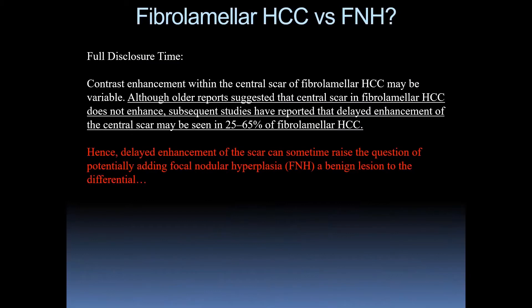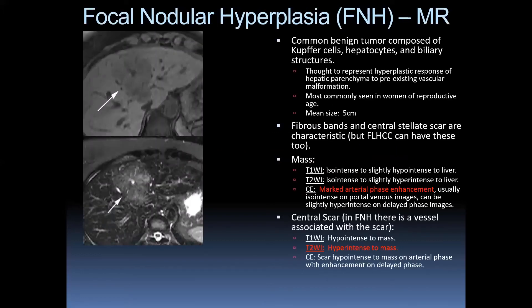Fibrolamellar HCC versus FNH: contrast enhancement within the central scar of fibrolamellar HCC can be variable. Older reports suggested the central scar does not enhance, but subsequent studies have shown delayed enhancement of the scar in up to 65%, which can raise the question of focal nodular hyperplasia. FNH is a common benign tumor of the liver containing Kupffer cells, hepatocytes, and biliary structures. Thought to represent a hyperplastic response to a pre-existing vascular malformation, most commonly seen in women of reproductive age with a mean size of five centimeters.